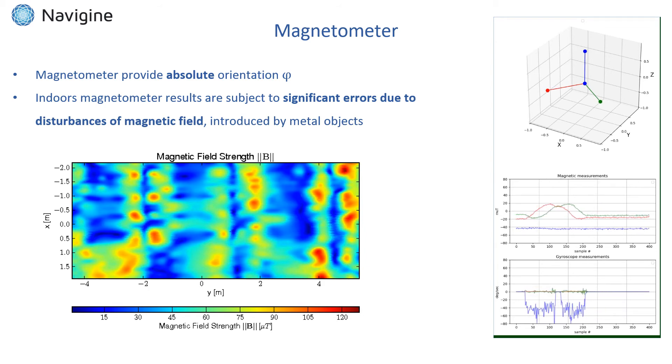For instance, the bottom figure represents magnetic field distribution in a typical office environment. One can see that magnitude of a magnetic field can significantly vary even on a relatively small scale. The influence of magnetic errors is also visualized on the left video.